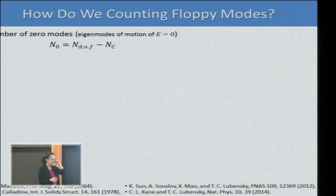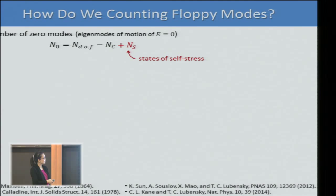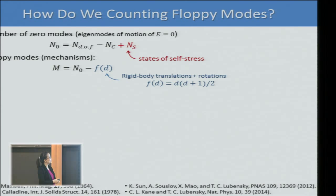That simple equation gives you the number of zero modes in your system. Maxwell said all constraints need to be independent. Later, Calladine added a new term — states of self-stress — that takes care of the fact that some constraints may be redundant. So now if you add this term, you don't need to distinguish redundant and non-redundant constraints.